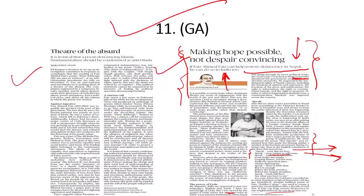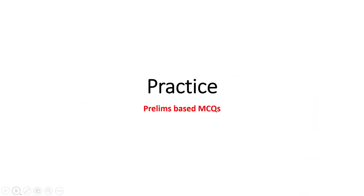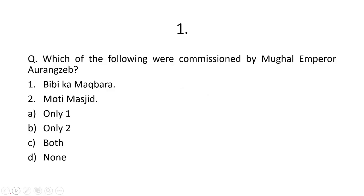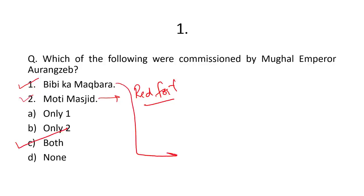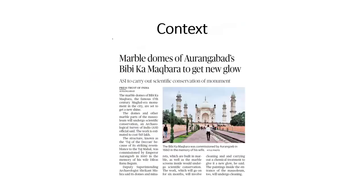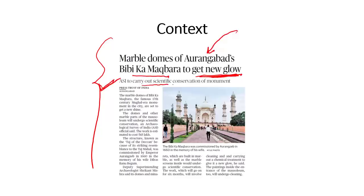Now let's look at practice questions. First, prelims-based: Which of the following were commissioned by Mughal Emperor Aurangzeb? Bibi Ka Maqbara — yes. Moti Masjid, which is inside Lal Qila Red Fort in Delhi — yes. Both were commissioned by Aurangzeb, although some historians say Bibi Ka Maqbara was actually built by Aurangzeb's son; nevertheless, it was commissioned and funded by Aurangzeb. The context: the marble dome of Bibi Ka Maqbara in Maharashtra is going to get a new glow, as the Archaeological Survey of India is to carry out scientific conservation of the monument.